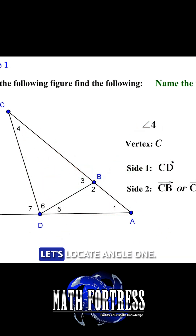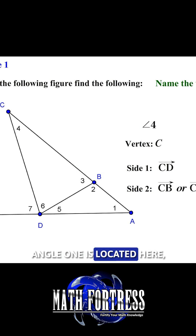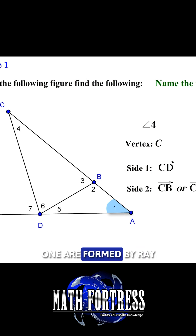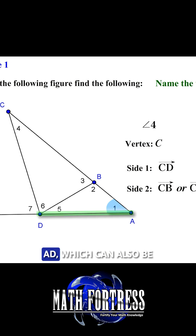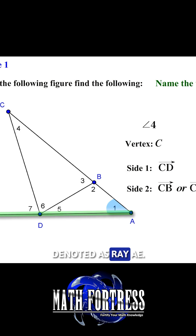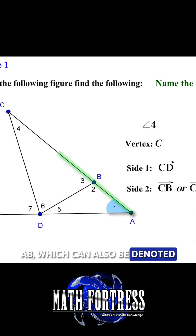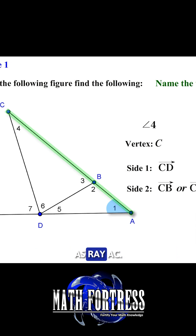In the same manner, let's locate angle 1. Angle 1 is located here and its vertex is represented by point A. The sides of angle 1 are formed by ray AD, which can also be denoted as ray AE. The second side of the angle is formed by ray AB, which can also be denoted as ray AC.